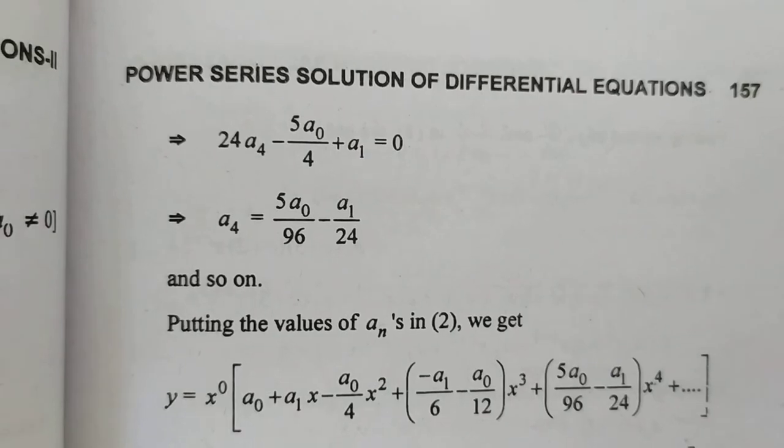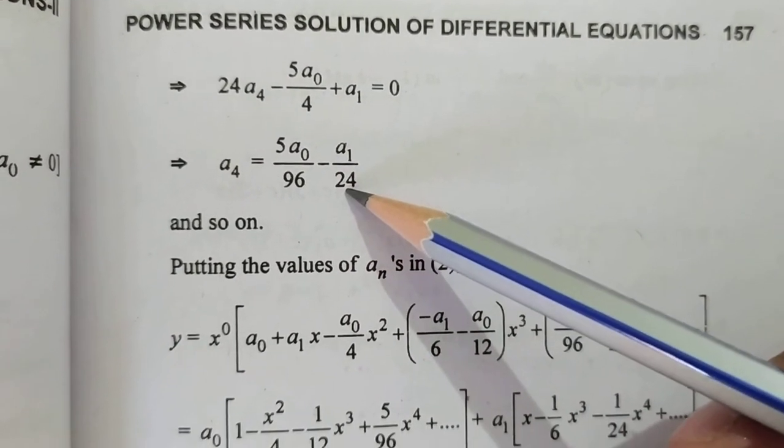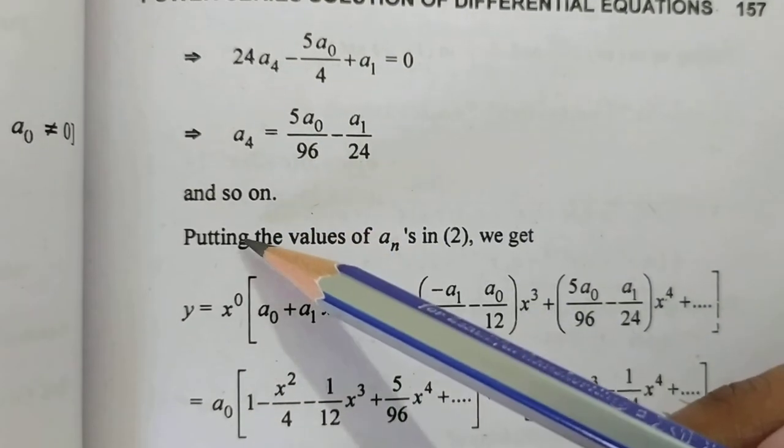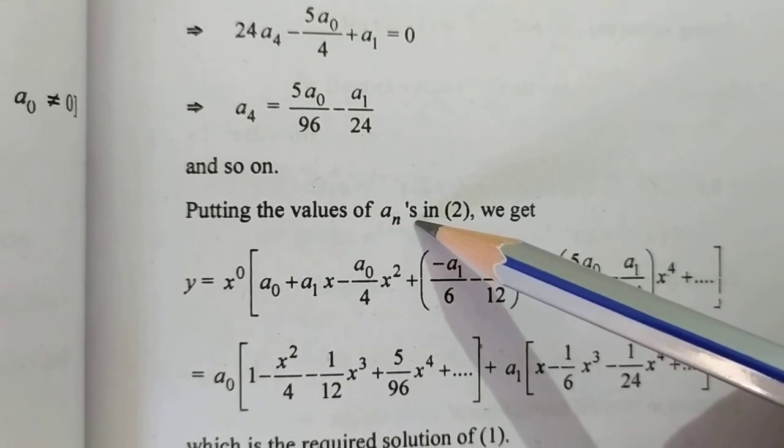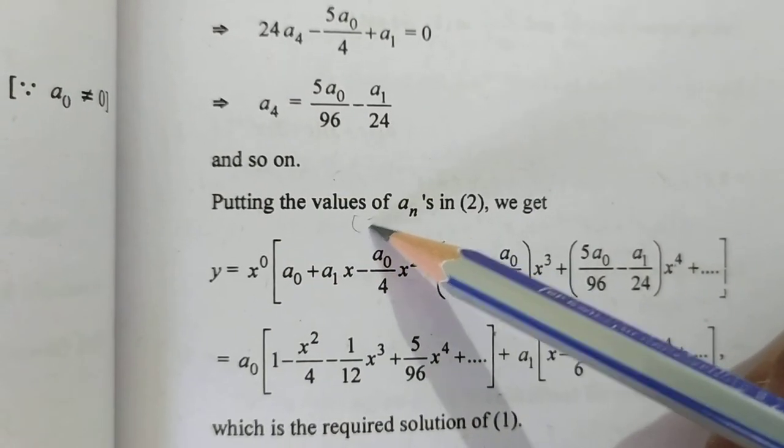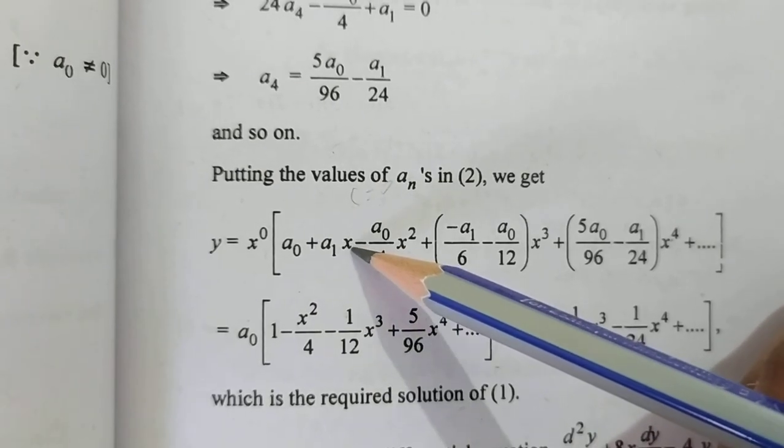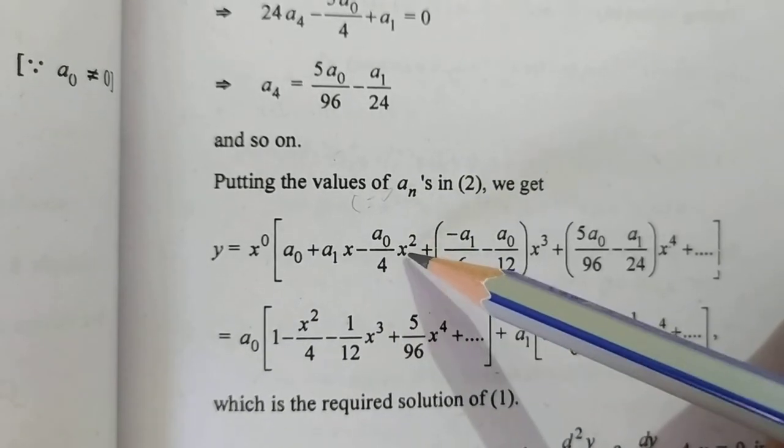Putting these values of the a's in equation 2, and putting c = 0, we get y = x⁰[a₀ + a₁x - (a₀/4)x² - (a₁/6 + a₀/12)x³ + (5a₀/96 - a₁/24)x⁴ + ...].